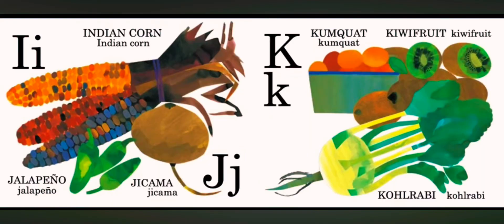I is for Indian corn. J is for jalapeño. J is for jicama.